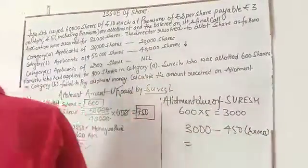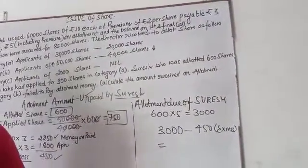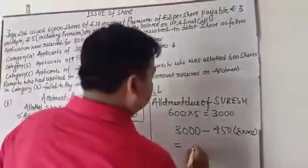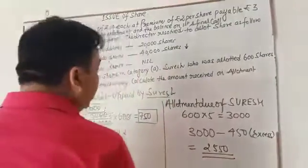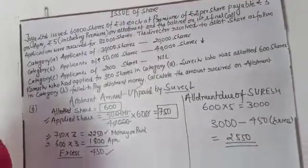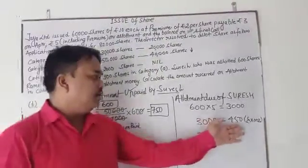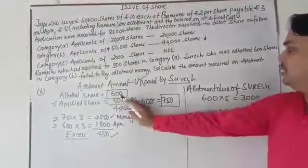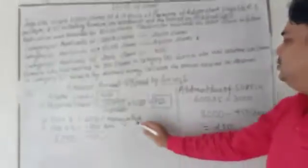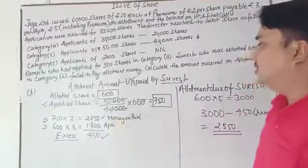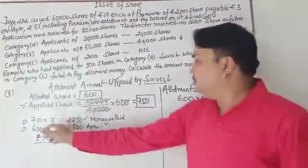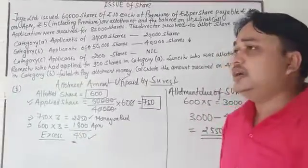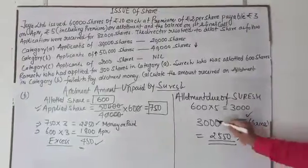So what you need to understand in this topic: first, calculate the number of applied shares. After calculating the number of applied shares, calculate the total amount paid by Suresh — that is 2,250. Then deduct the application money utilized by the company, which is 1,800. The excess amount — the extra amount paid by Suresh — is deducted at the time of allotment. That result is called the unpaid amount.